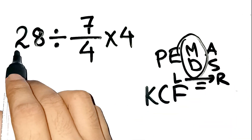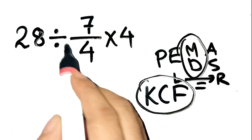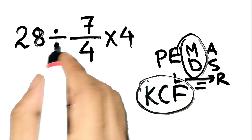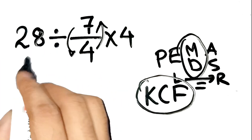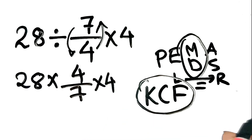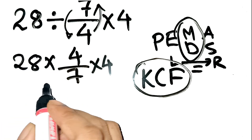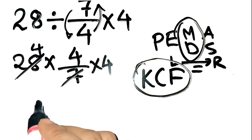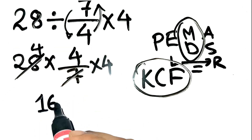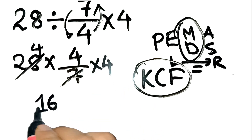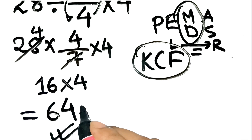The tricky part is 28 divided by 7 over 4. Using KCF, dividing by 7 over 4 is the same as multiplying by its reciprocal, which is 4 over 7. So now we have 28 times 4 over 7, times 4. Step 1: 28 times 4 over 7 — 28 divided by 7 is 4, and 4 times 4 equals 16. So the first part simplifies to 16. Step 2: multiply by the remaining 4. 16 times 4 equals 64.